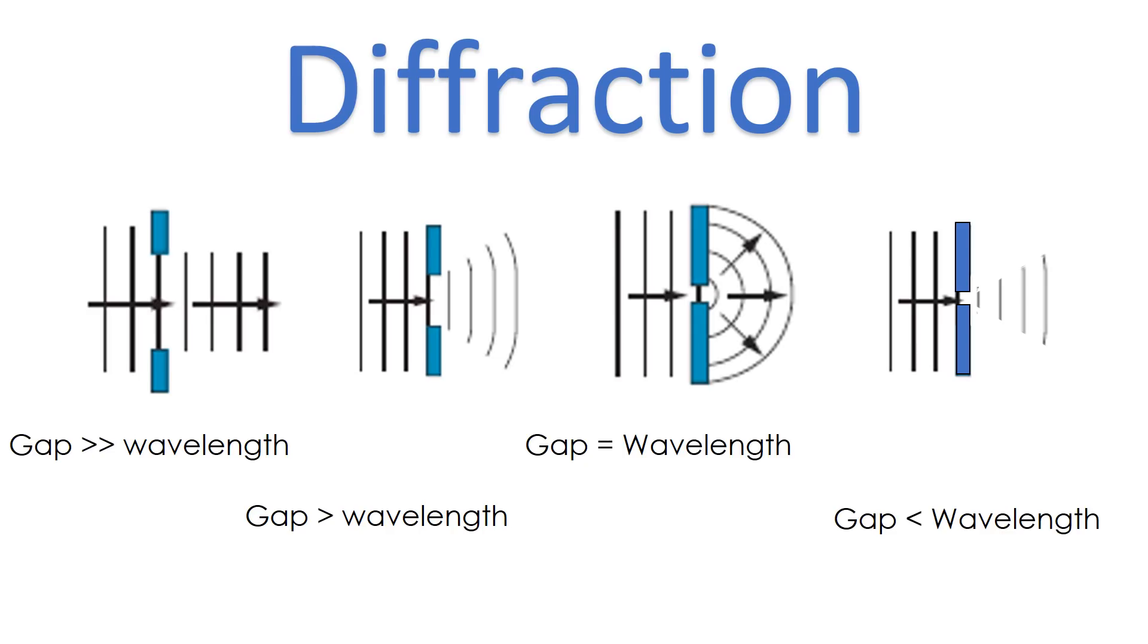So the bigger the gap gets, the smaller the diffraction is going to get. And we can look at one more scenario. What if the gap is smaller than the wavelength? And if you do that, the diffraction becomes smaller again that way. So if your gap is really big compared to the wavelength, you get basically no diffraction. As your gap gets smaller, we start to get some diffraction. We get maximum diffraction where the gap is the same size as the wavelength. And as it gets smaller still, the diffraction then gets less.